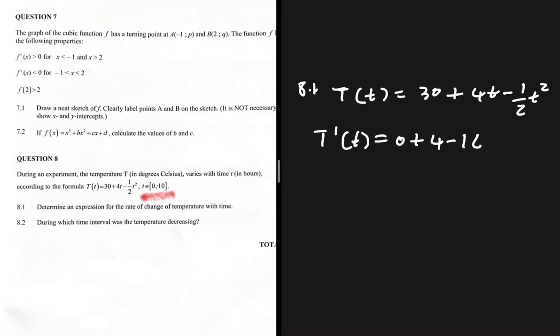So the first derivative, the rate of change of temperature with time, is 4 minus t. That is the answer to 8.1. Now looking at 8.2, the question says: during which time interval was the temperature decreasing?